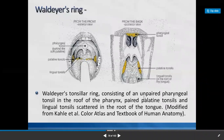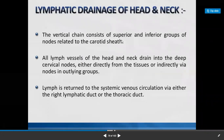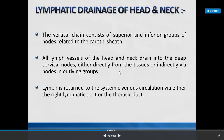Waldeyer's tonsillar ring consists of the unpaired pharyngeal tonsil in the roof of the pharynx, paired palatine tonsils, lingual tonsils scattered at the root of the tongue, and tubal tonsil at the opening of the Eustachian tube. The vertical chain of lymphatic drainage of head and neck consists of superior and inferior groups related to the carotid sheath. All lymph vessels of head and neck drain into the deep cervical group either directly or indirectly via outlying lymph nodes.